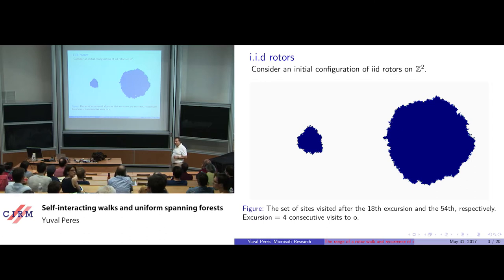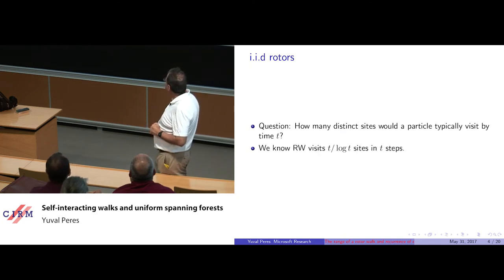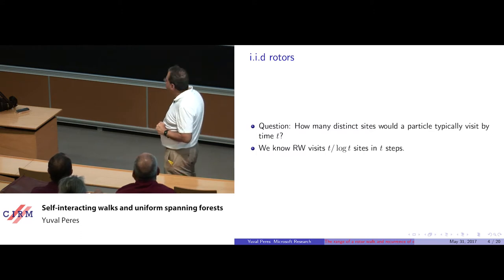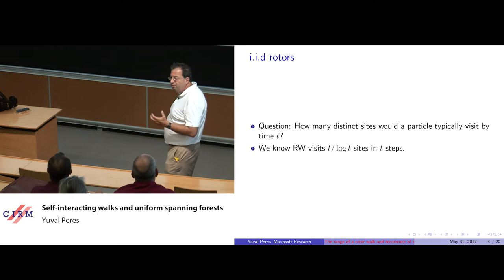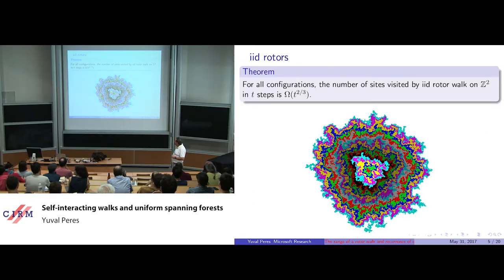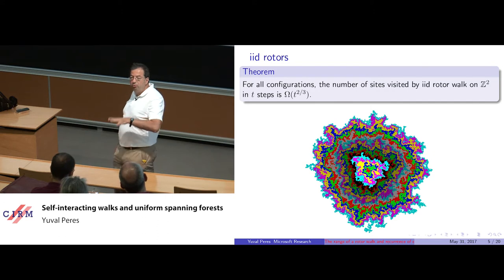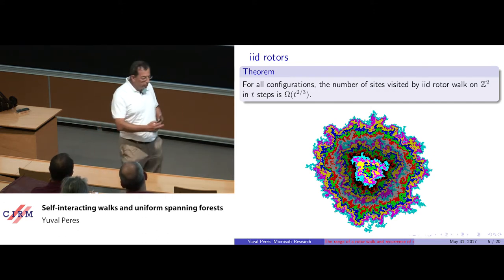Ed actually has a nice movie showing this; I'm just showing still pictures. One basic question is: at time t, how many distinct sites have been visited? For perspective, recall that random walk visits up to constant t over log t sites in t steps when walking in two dimensions. One striking aspect of this model is that each excursion contains all the previous excursions, very different from random walk where excursions have some independence.